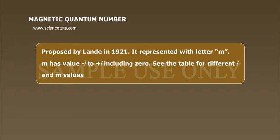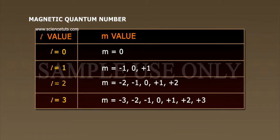See the table for different l and m values. L value, m value. L is equal to 0, m is equal to 0. L is equal to 1, m is equal to minus 1, 0, plus 1. L is equal to 2, m is equal to minus 2, minus 1, 0, plus 1, plus 2.